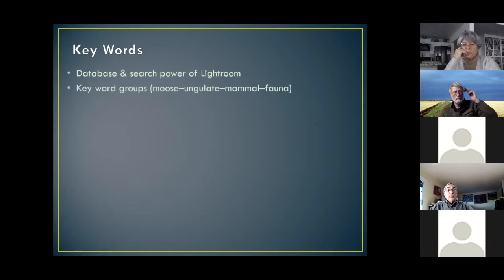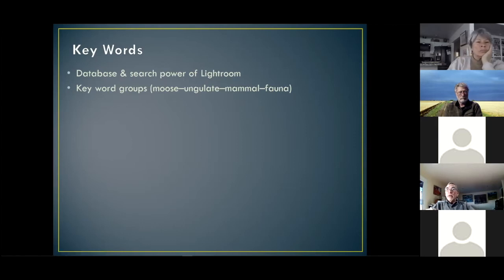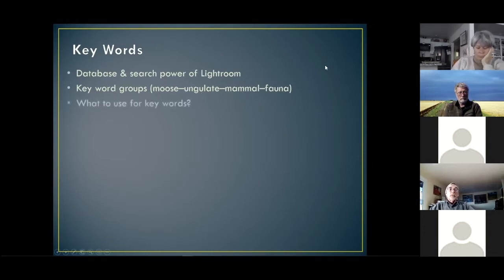Lightroom has the ability to use keyword groups. If I pick a subject like a moose, Lightroom can recognize that a moose is an ungulate, that an ungulate is a mammal, and that a mammal is a member of fauna. So you can get all of those different words in. If someone says they need an image of an animal in the snow, you can pull up fauna, then narrow to mammal, then ungulate — it really helps you get very specific.